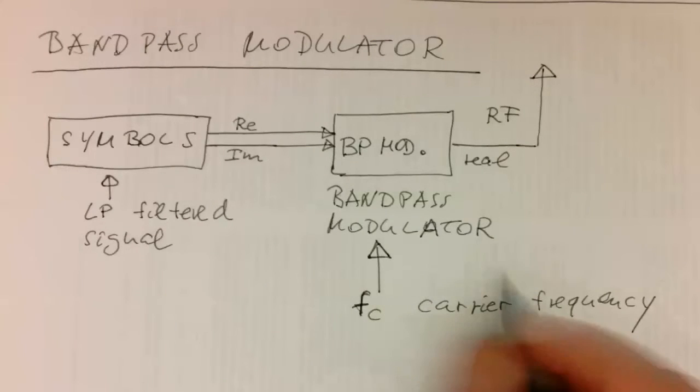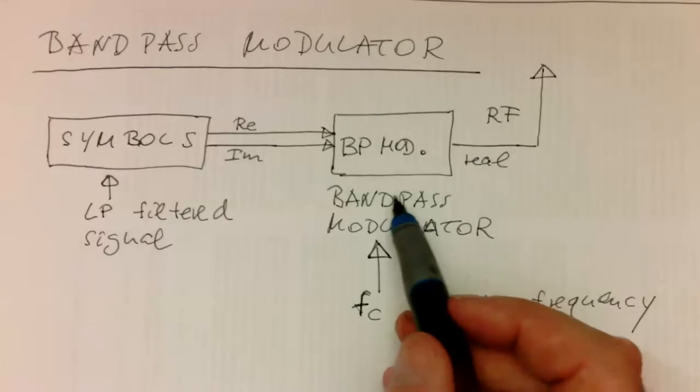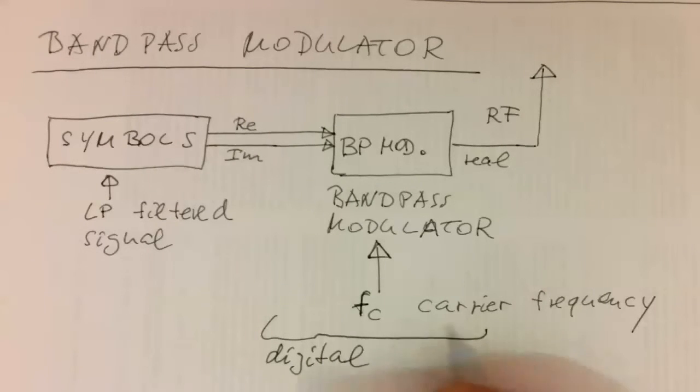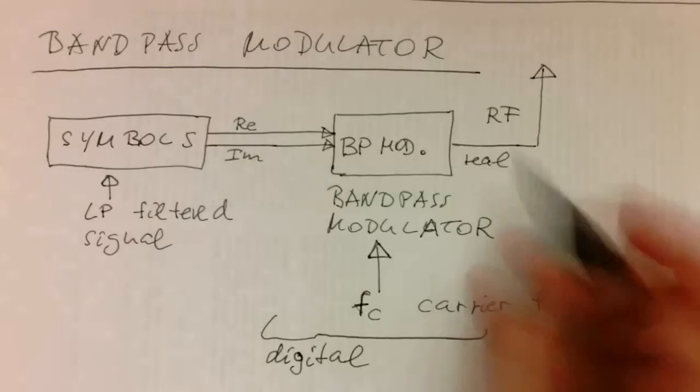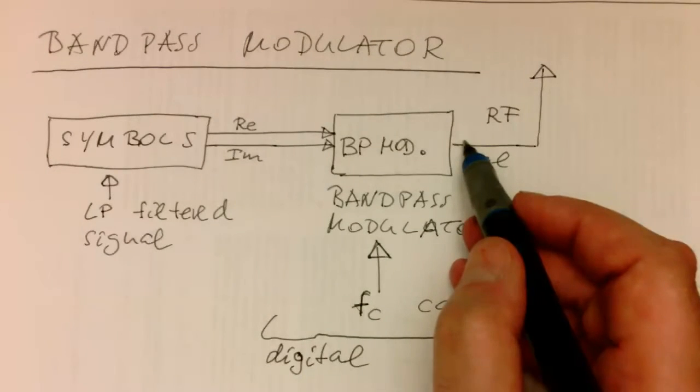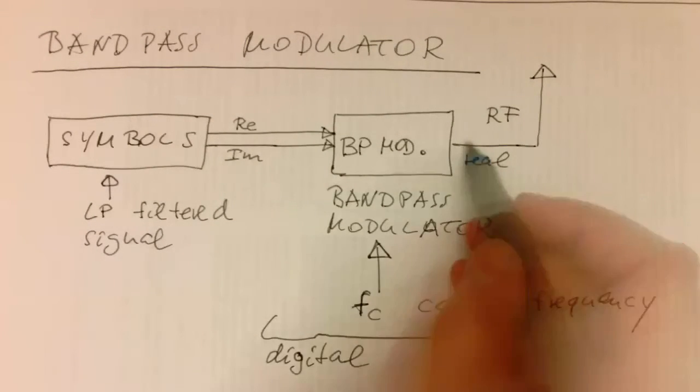So remember, still, this is a digital system here. So that's here, all digital. But this is obviously because this generating RF is running at a much higher sampling rate than the symbol rate here.